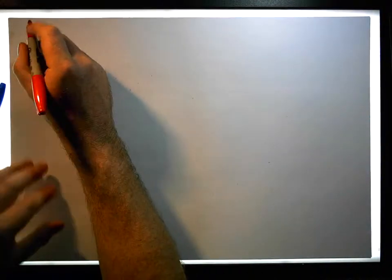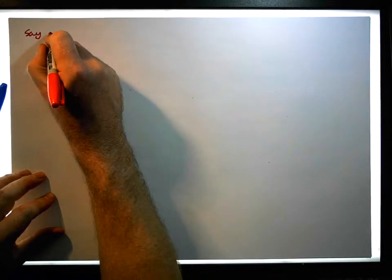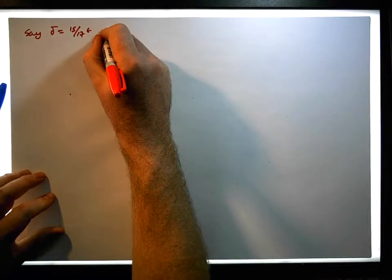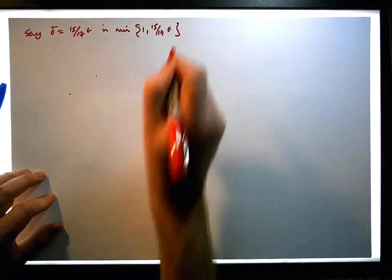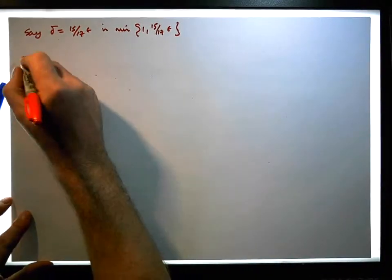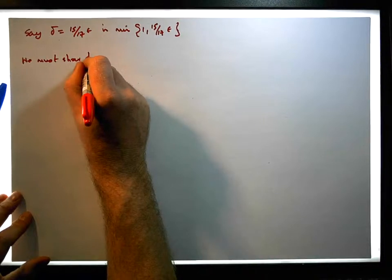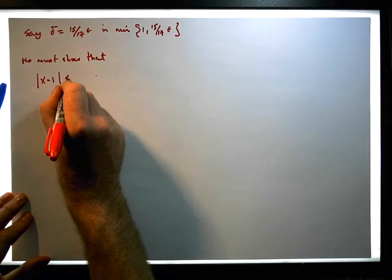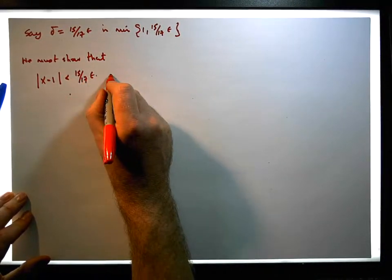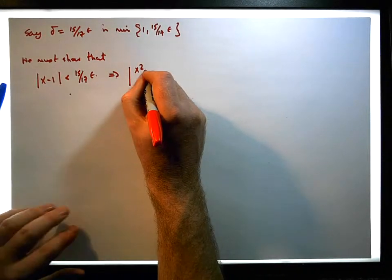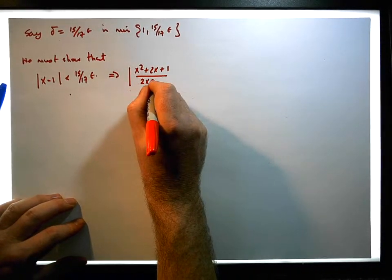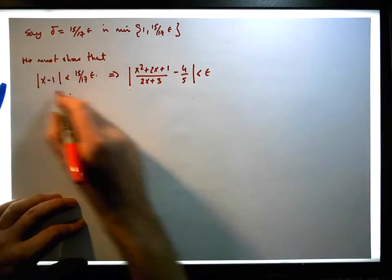It's the final case, and this is the easy one as well. Delta is equal to 15 over 17 of epsilon — that is, delta is the minimum of 1 and 15 over 17 of epsilon. So what we need to show is that the absolute value of x minus 1 is less than 15 over 17 of epsilon, and that implies that x squared plus 2x plus 1 all over 2x plus 3, minus 4 fifths, is less than epsilon. So we have to show this.